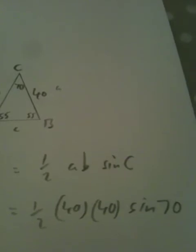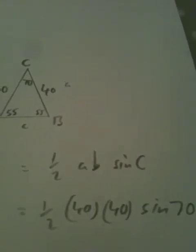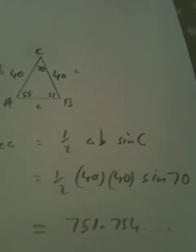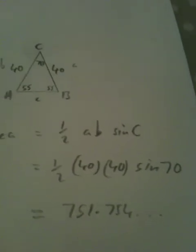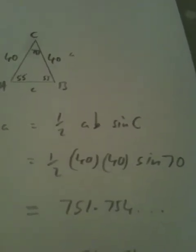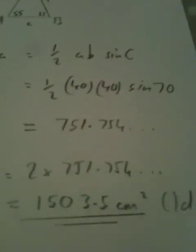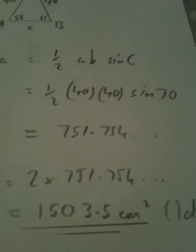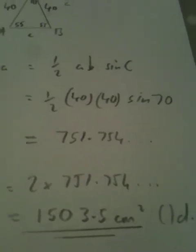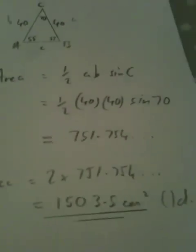When we're using that formula, we have an angle at the top here of 70 and the two sides that kind of meet at that angle. Substituting the values of 40 and 40 for a and b, and 70 degrees for angle C, press the buttons on the calculator: 751.754. Quick reminder, that is only the top half of the rhombus, so we'll need to double that. Comes out as 1503.5 centimeters squared to one decimal place. Don't round halfway through the question, only round at the end.